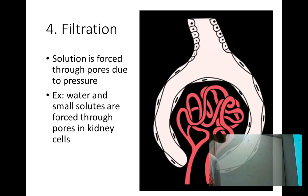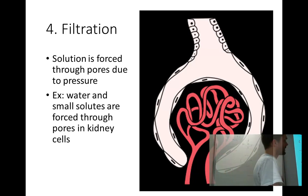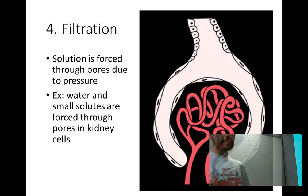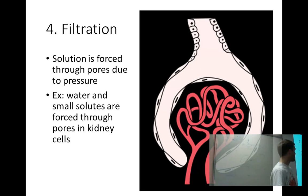Filtration is when a solution is forced through openings or pores by pressure. An example is a hose with holes — water pressure determines how much comes out. In the body, this happens in your kidney cells, where capillaries filled with blood are pressurized by your heartbeat, forcing water and small molecules out of the blood to be trapped in the kidneys.